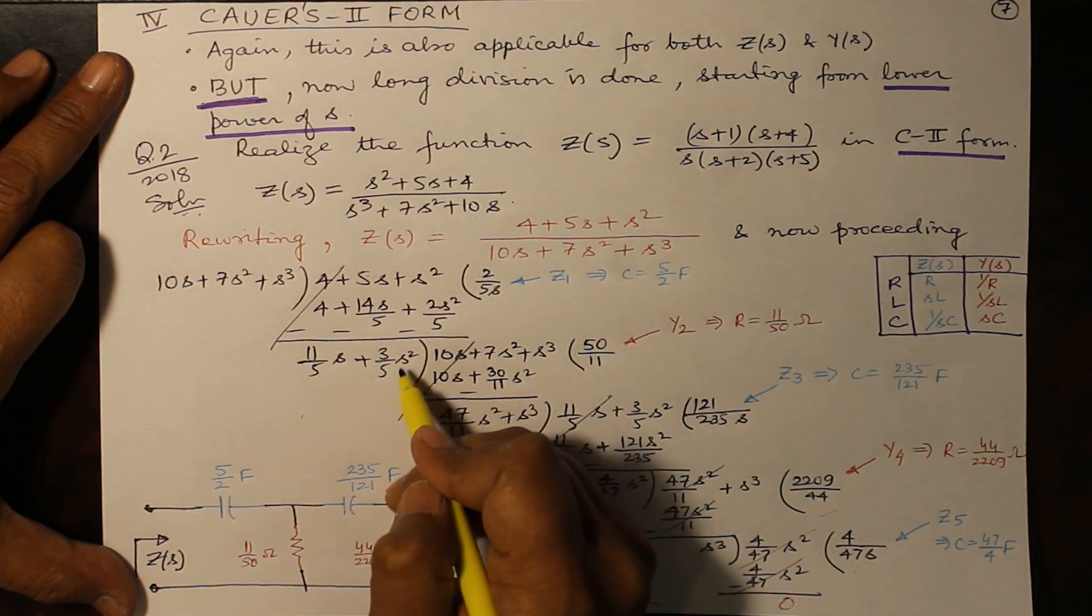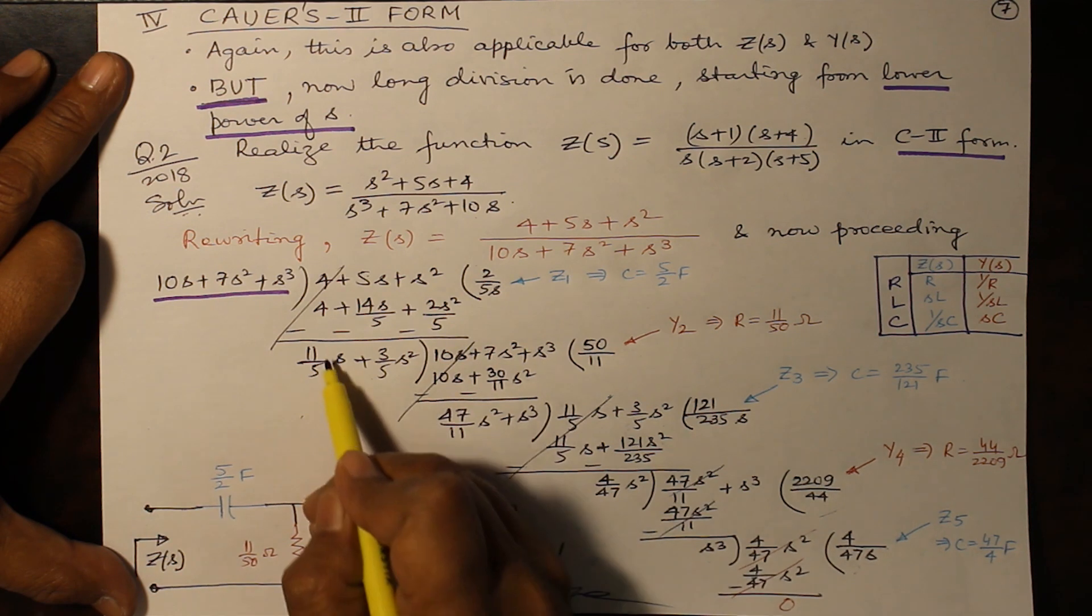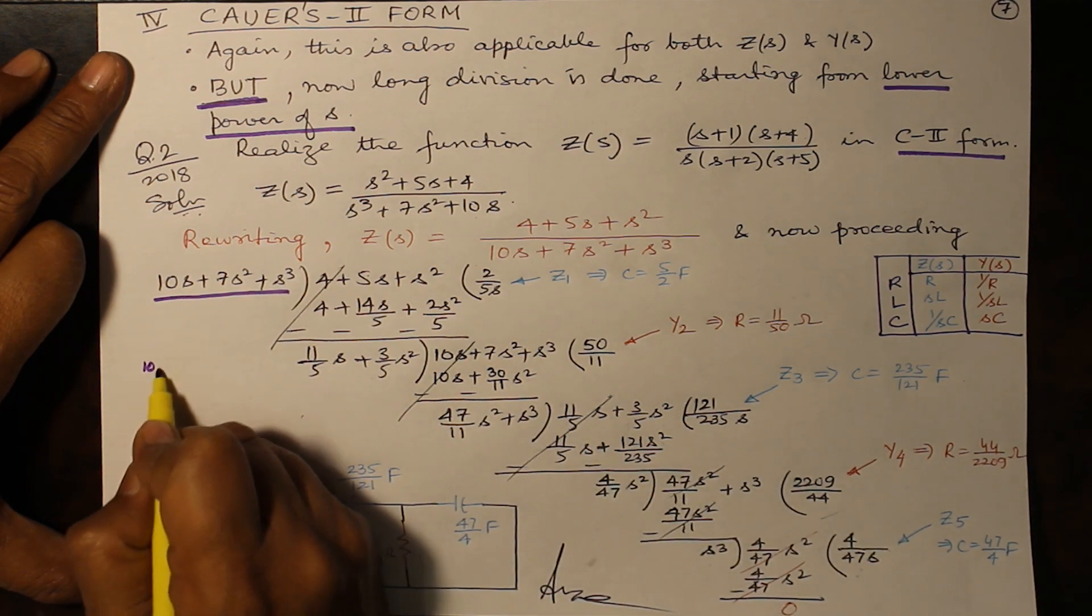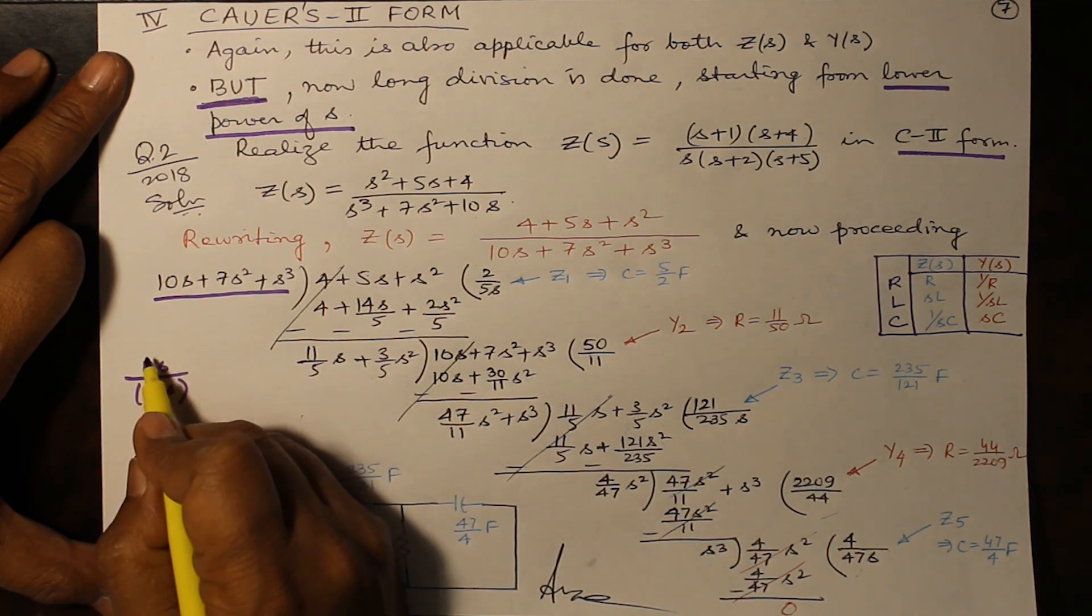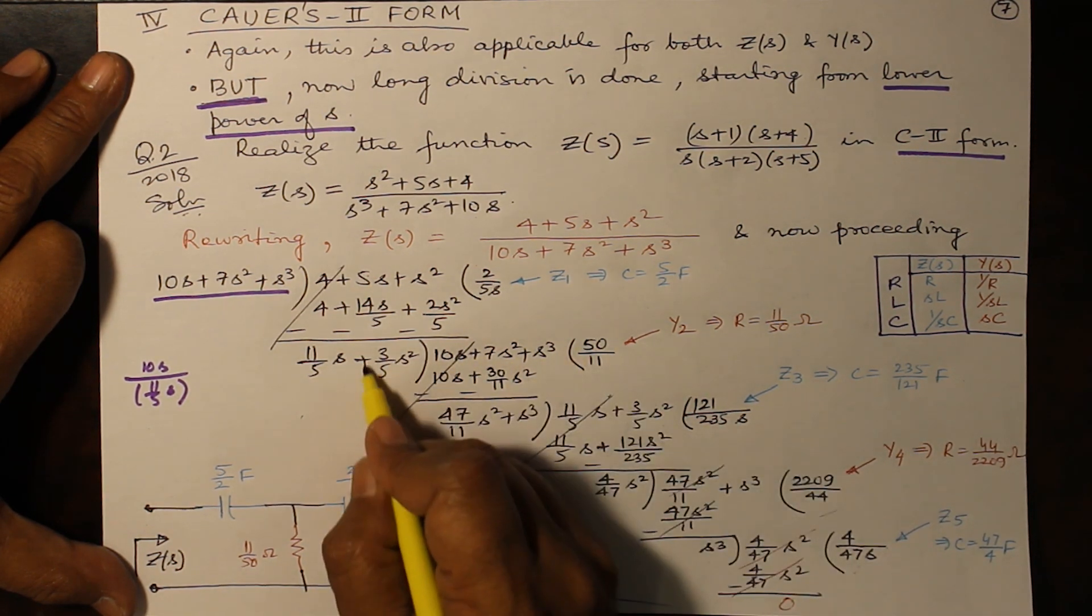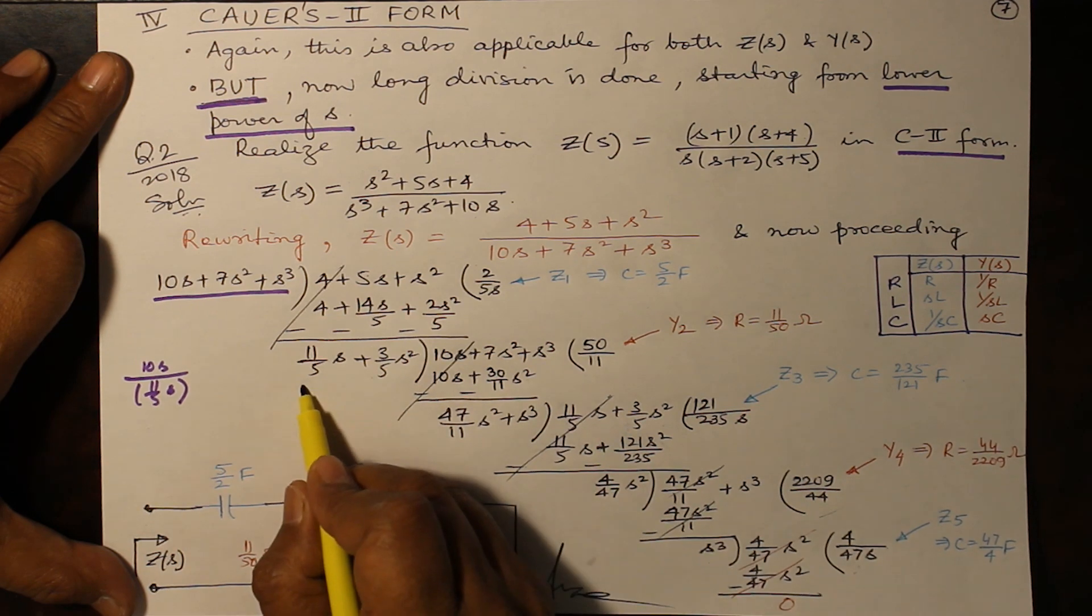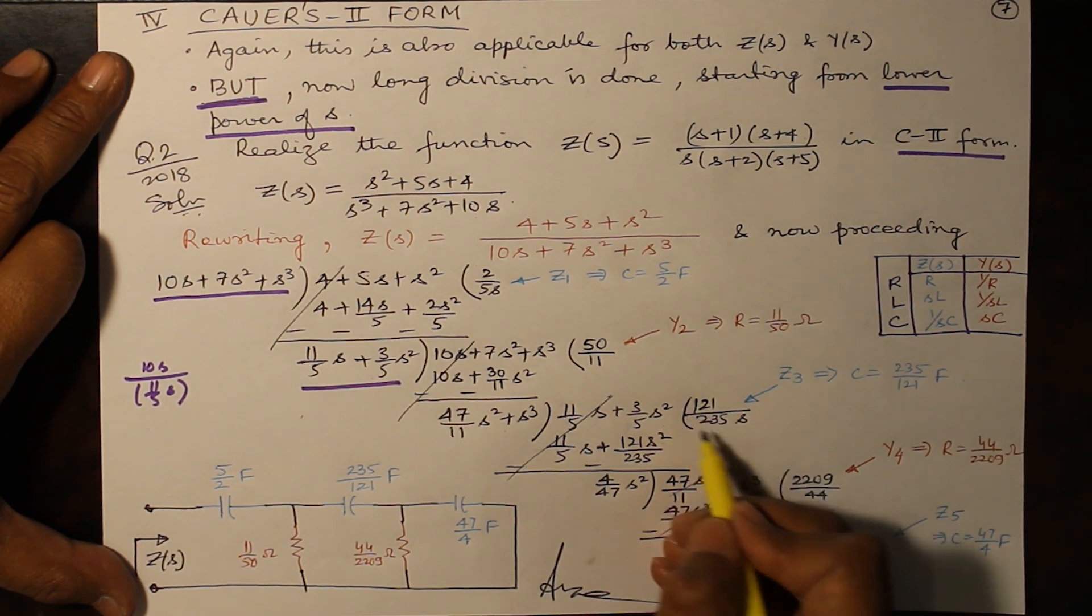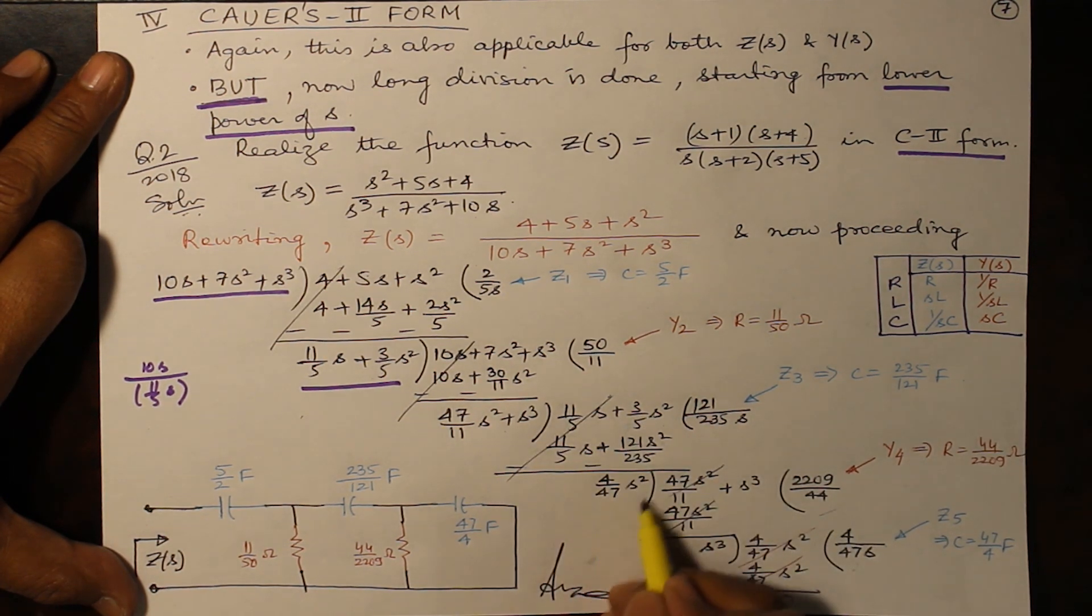This term comes here: 10s + 7s² + s³. What should be multiplied to 11 by 5s so that it becomes 10s? 10s divided by 11 by 5s, s gets cancelled, 5 goes in the numerator, you will get 50 by 11. So this gets cancelled. 50 by 11 multiplied by 3 by 5s² gives you 30s² by 11. On subtraction it yields this value. This whole thing comes here and again in the similar manner, 121 by 235s comes here.